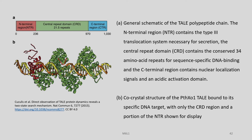This is the general schematic of the TAL polypeptide chain and its various domains. They did crystallization experiments to find the co-crystal structure of PthXo1 TAL bound to its specific DNA target, with only the CRD region and a portion of the NTR shown. The TAL repeats within the CRD exhibit a right-handed super-helical structure that wraps along the major groove of the double helix in B-form DNA.